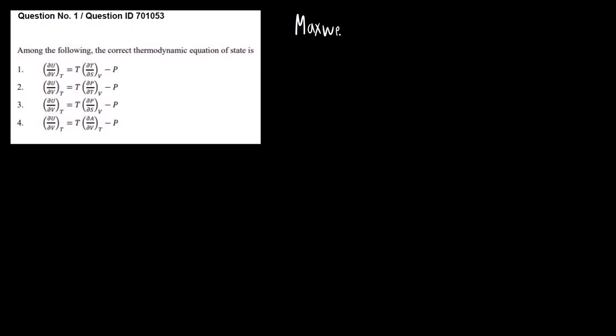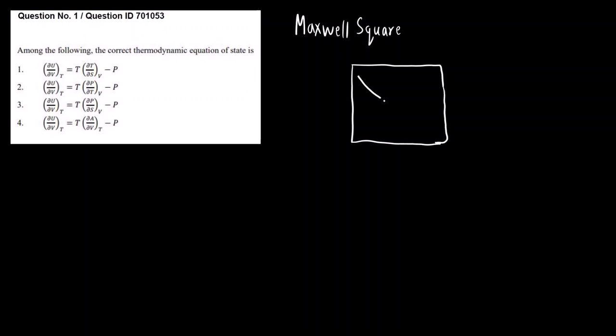Among the following, the correct thermodynamic equation of state is given. We have to write down the Maxwell equation that we can get from the Maxwell square. For that we need to draw this Maxwell square. There are different ways of remembering the Maxwell square; you can use any trick or mnemonic that you remember.